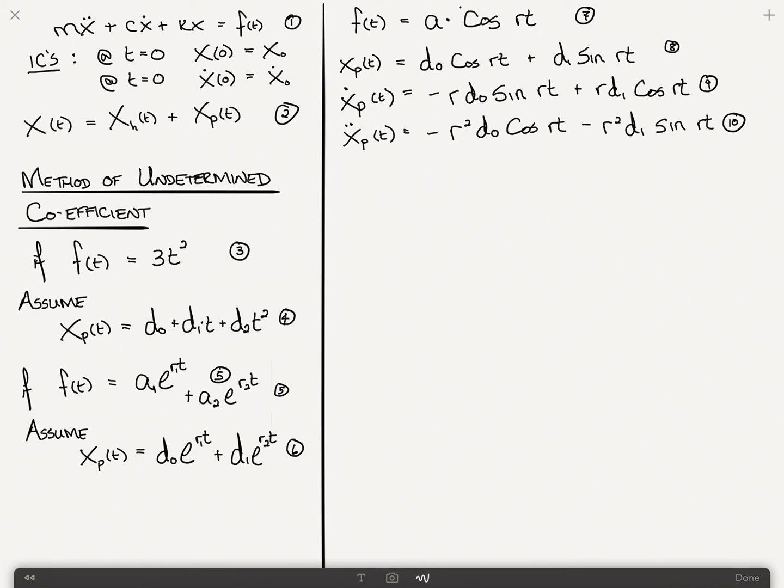Now the idea is we want to substitute 7, 8, 9, and 10 into equation 1. And we end up with, from equation 10 multiplied by m, I get minus m r squared d0 cosine rt minus m r squared d1 sine rt.